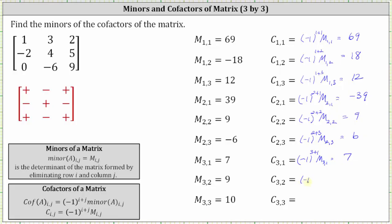Cofactor three comma two is equal to negative one raised to the power of three plus two times minor three comma two, which gives us negative one times nine, which is negative nine. And finally, cofactor three comma three is equal to negative one raised to the power of three plus three times minor three comma three, which is one times ten, which is ten.